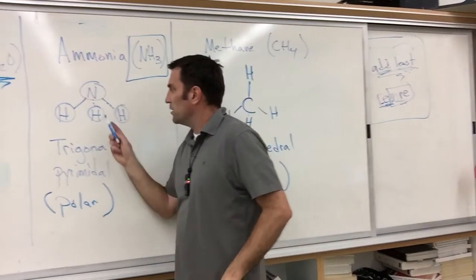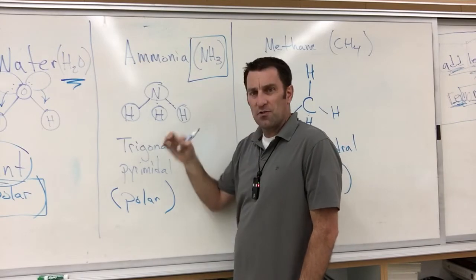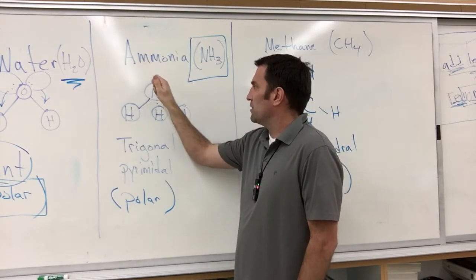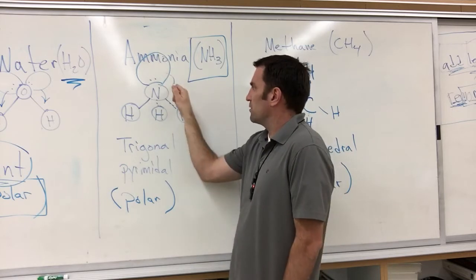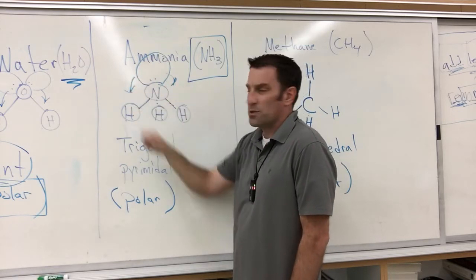And ammonia looks like one N with three Hs forced down below it. And once again, that's because there's an electron pair up here that's exerting a force, forcing them down.